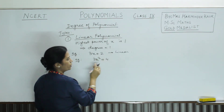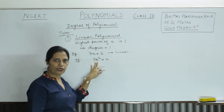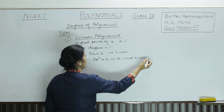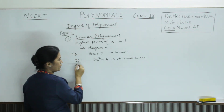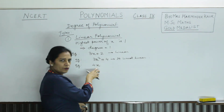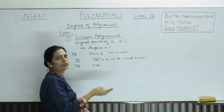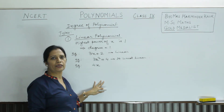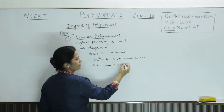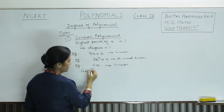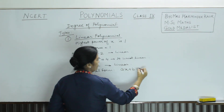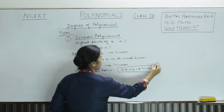Consider 3x squared plus 4 — will it be linear? No, because the highest power of x is 2, so it is not linear. Another example: 4x — is it linear? The highest power of x is 1, and whether a constant term is present or not does not matter. So we say it is linear. The general form of a linear polynomial is ax plus b.